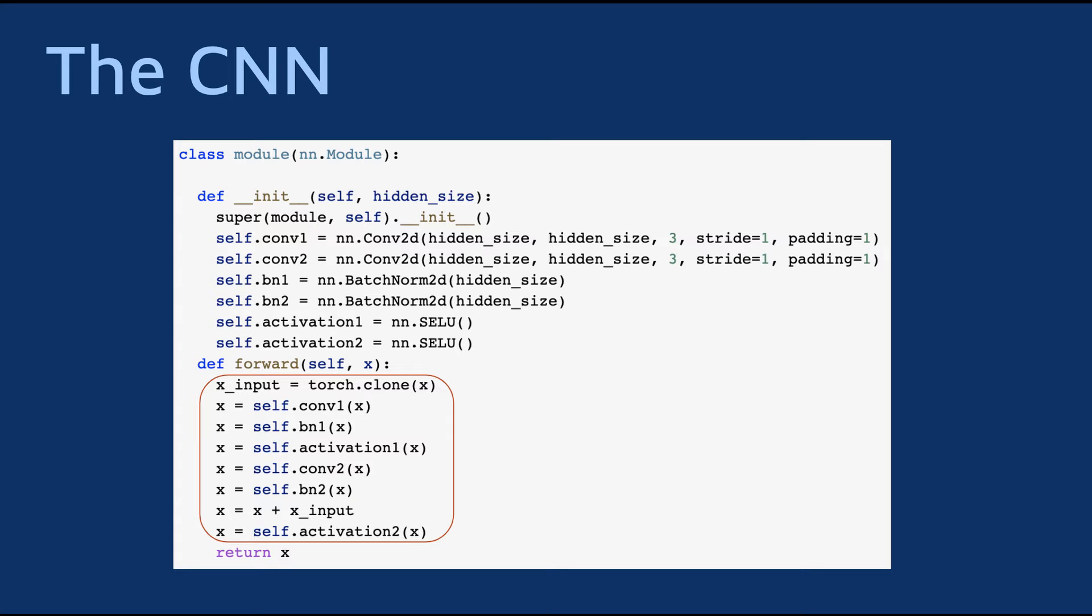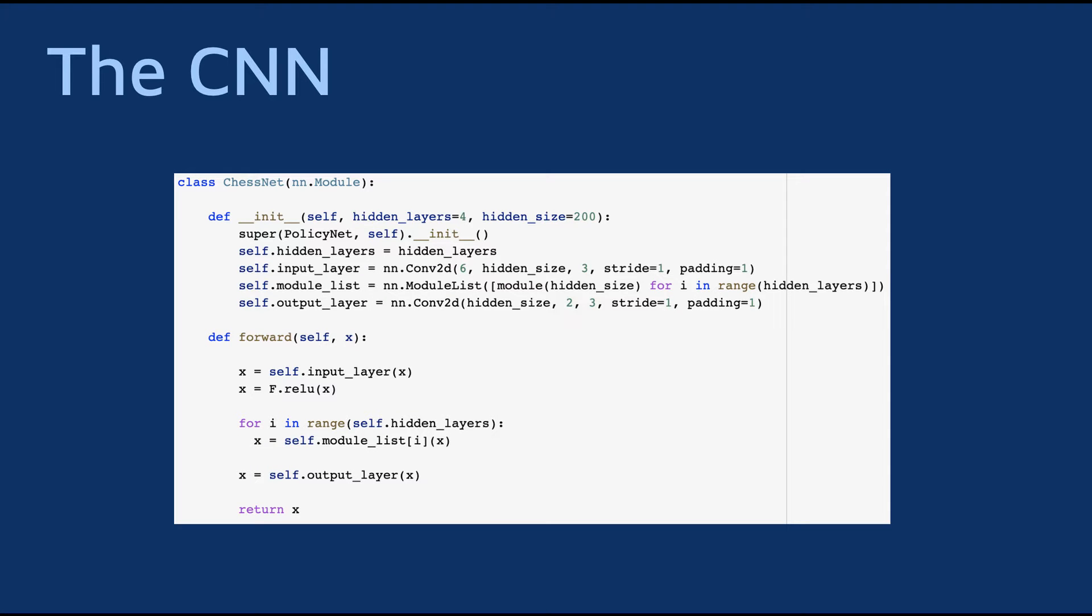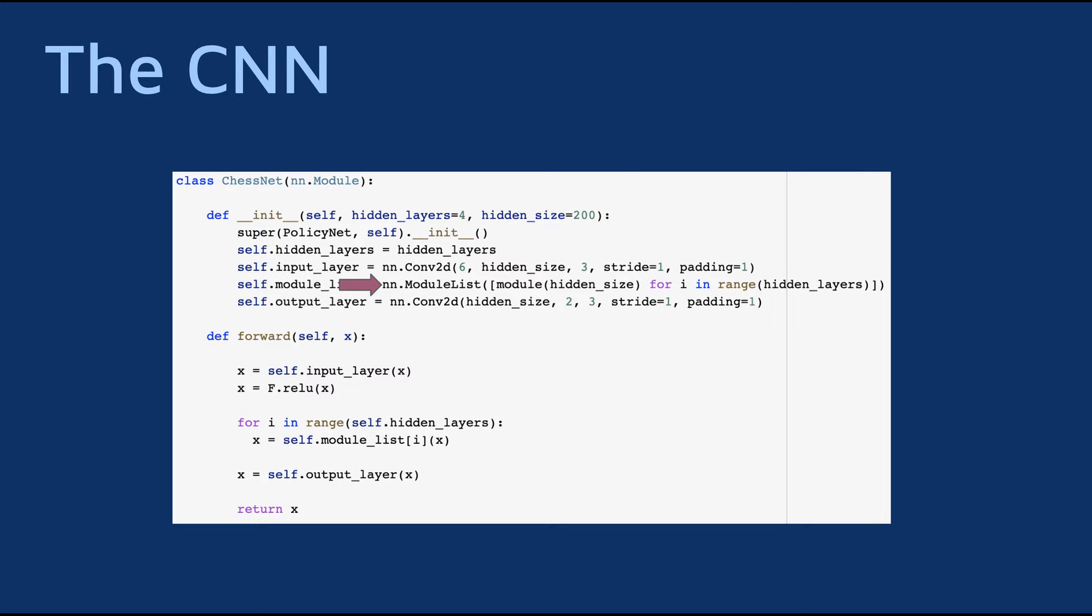If you want a separate video that goes into more detail about how batch normalization or residual connections work, or why they work, let me know in the comments and I'll do my best to get working on it ASAP. We use this module as a repeatable part of a whole network. Aside from an input layer and an output layer, the whole network is basically several modules one after another. Note the usage of the NN module list to efficiently create several modules. If you use the regular list, the parameters of the module will not be recognized by the overall network and will not get updated during the training process.